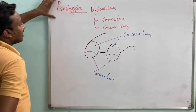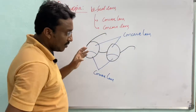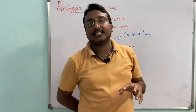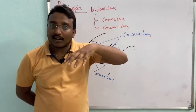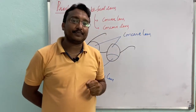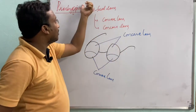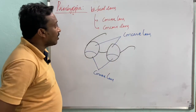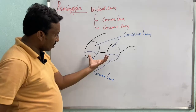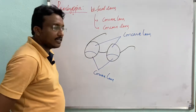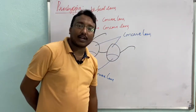Presbyopia is a defect that causes the loss of flexibility of the ciliary muscle. It can be cured by using a bifocal lens. The lower part of the lens is a convex lens and the upper part is a concave lens.